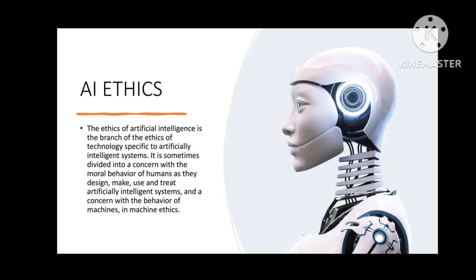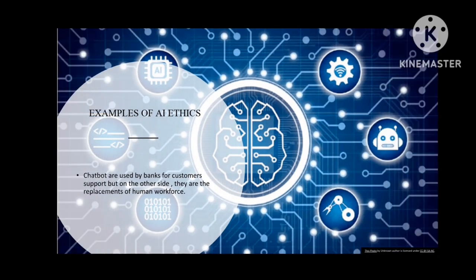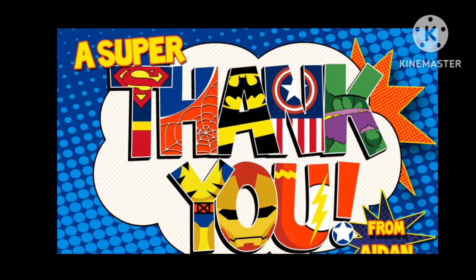AI ethics also involves coordinating with the behavior of machines in machine ethics. An example of AI ethics involves chatbots — chatbots are used by banks for customer support, but on the other side they are replacements for human workforce. Okay guys, that is about artificial intelligence. Thank you for watching my video and do not forget to like, share and subscribe. We will meet in the next video!